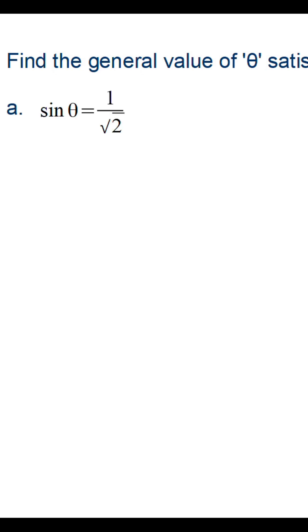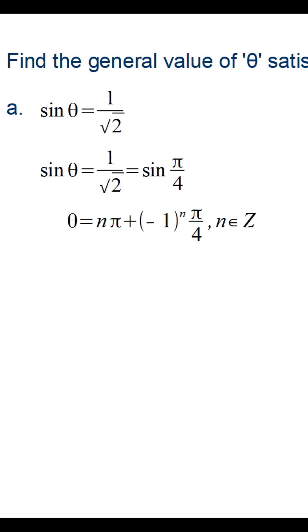Find the general value of theta satisfying sine theta equal to 1 by root 2. We know that sine pi by 4 is equal to 1 by root 2. Hence, substituting pi by 4 in the general solution formula, we get theta is equal to n pi plus minus 1 raise to n, pi by 4.